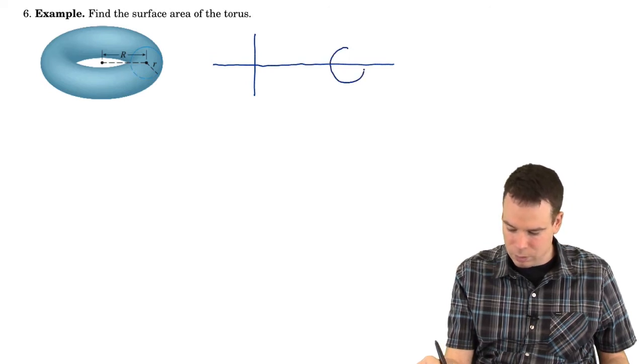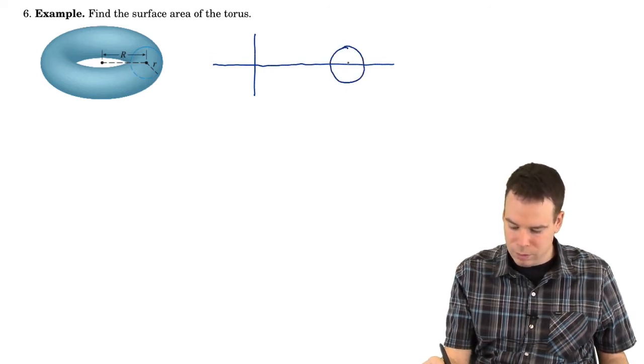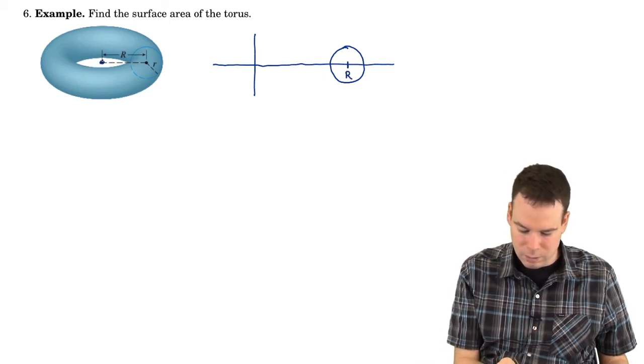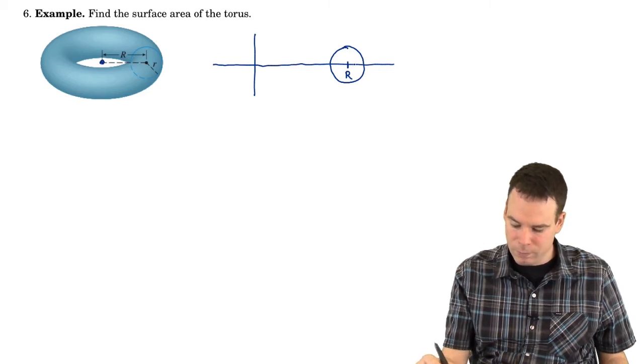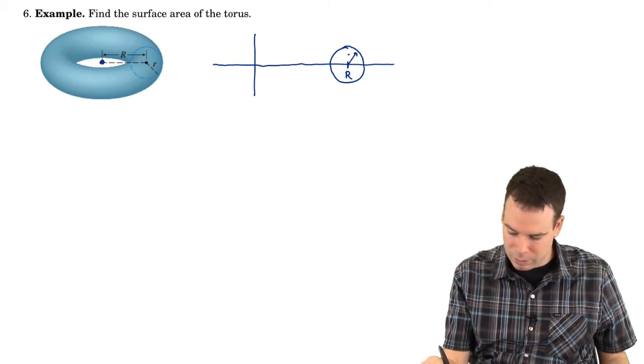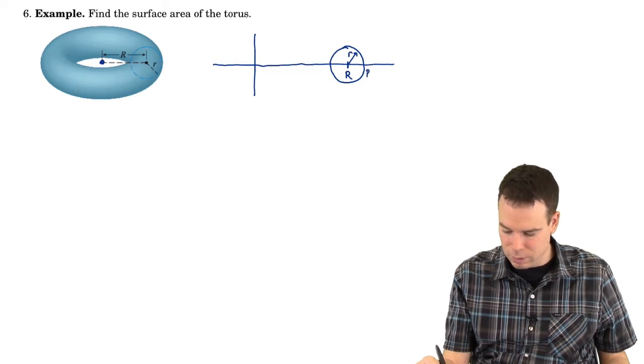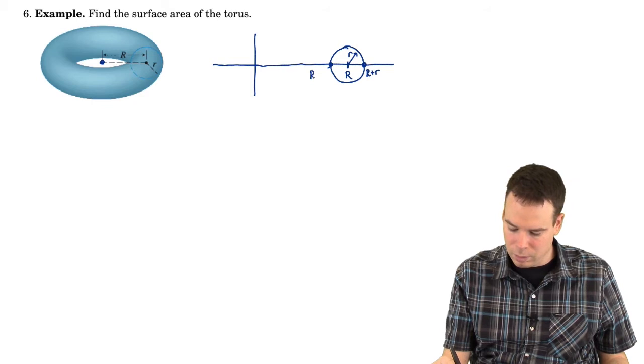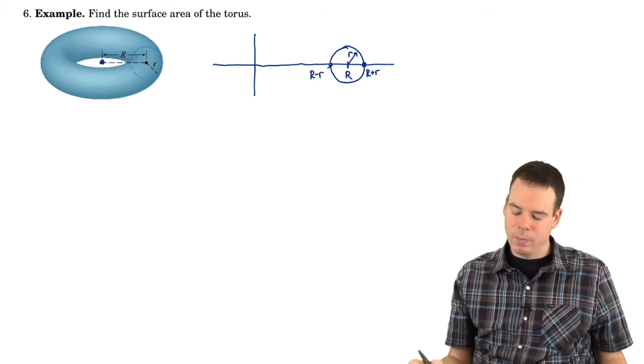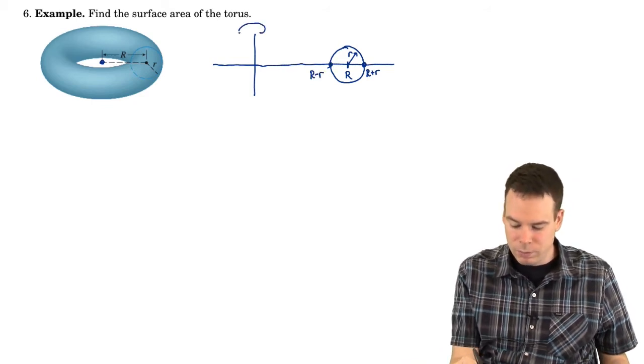What's being revolved? Well, we start with a circle. It's going to be centered here at big R. That's the distance that this circle in the diagram is from the center. And it's a circle of radius little r. So this is R plus little r out here on the x-axis and this is R minus little r. That's the thing that's being revolved around the y-axis.